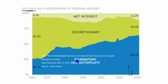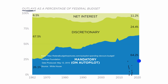You first see the mandatory outlays — labeled 'on autopilot.' These are commitments that the federal government has already made by law to people, things like entitlements such as Social Security and Medicare. One interesting trend is these have grown from 25% of the total federal budget in 1962 to a projected almost two-thirds of the federal budget in 2020.